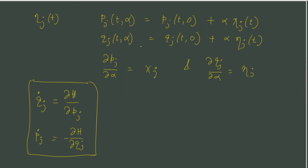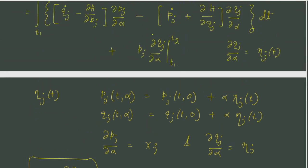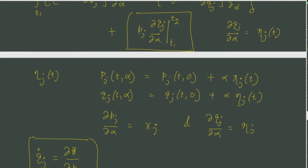For the variation of the path in the configuration space, the eta j must vanish at the end point. We need that to have this term going to zero, just like we did it previously when we applied Hamilton's principle.